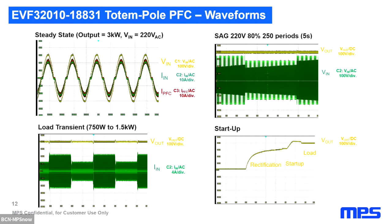These are waveforms from our evaluation board in steady state. As you can see, with the input voltage at 220V and output at 3 kilowatts, the input current follows the shape of the input voltage, achieving a power factor close to one. We also demonstrate load transients — when we switch the load we are able to maintain regulation on the output. We can also withstand input voltage variation, such as a voltage sag where the input voltage is suddenly reduced by around 20%, and we maintain regulation.